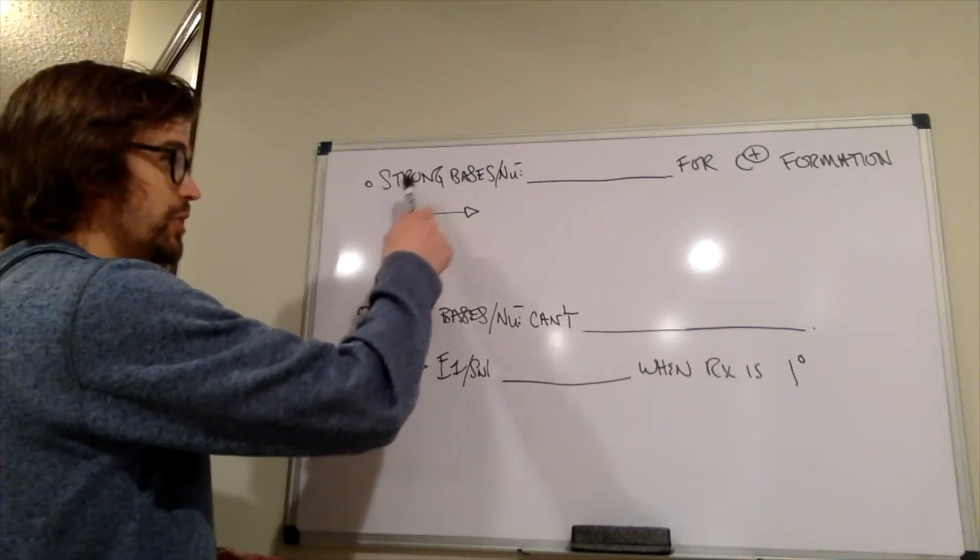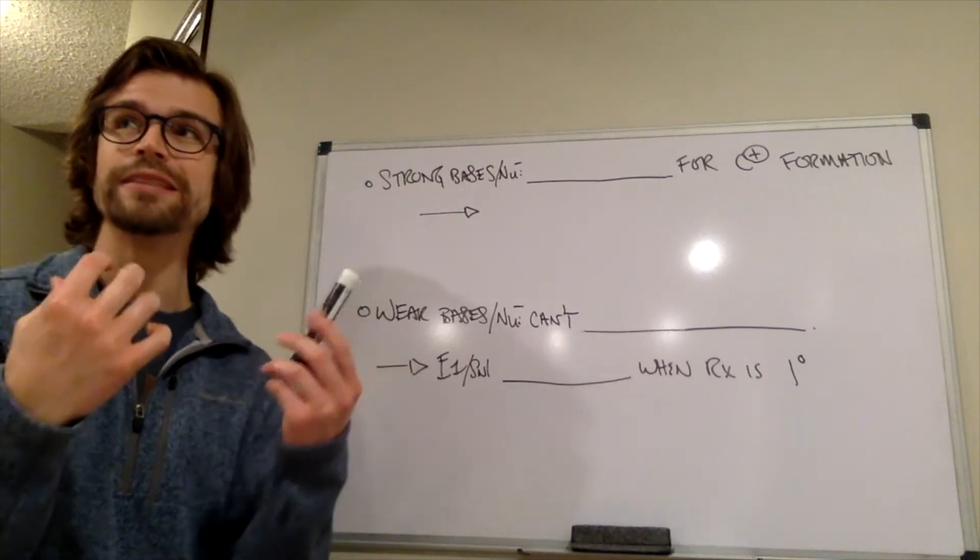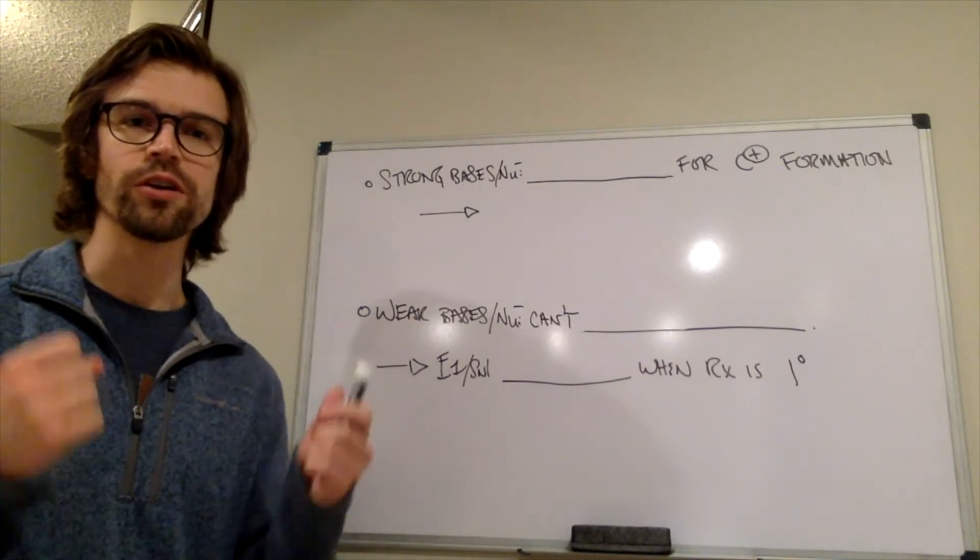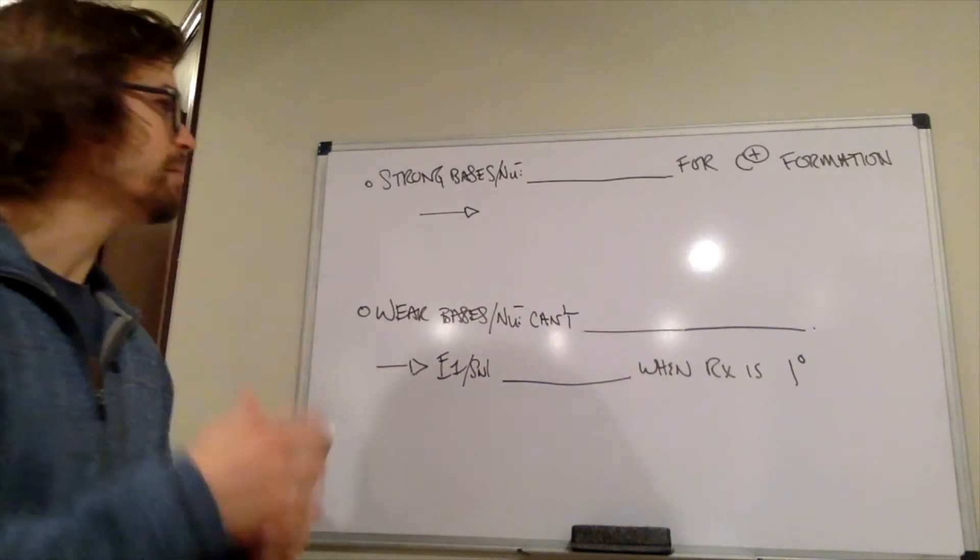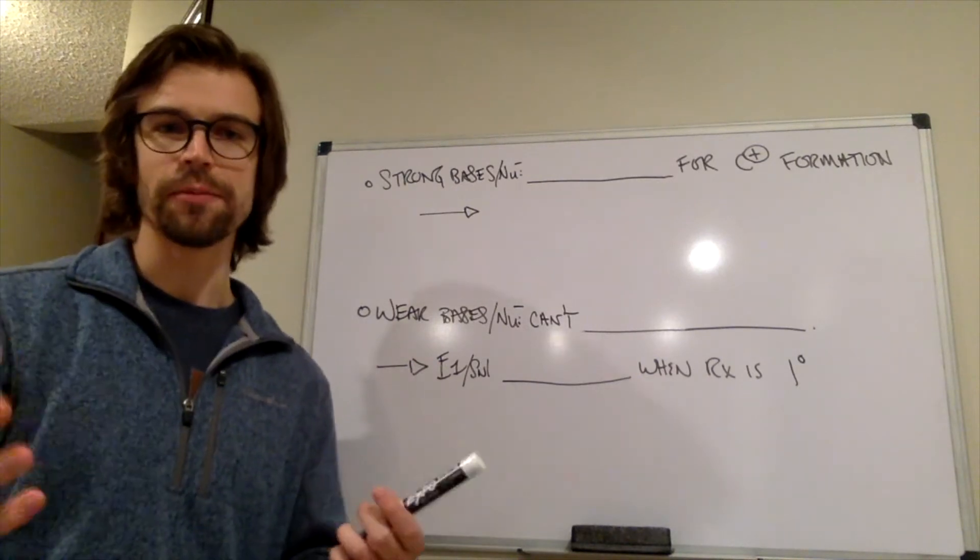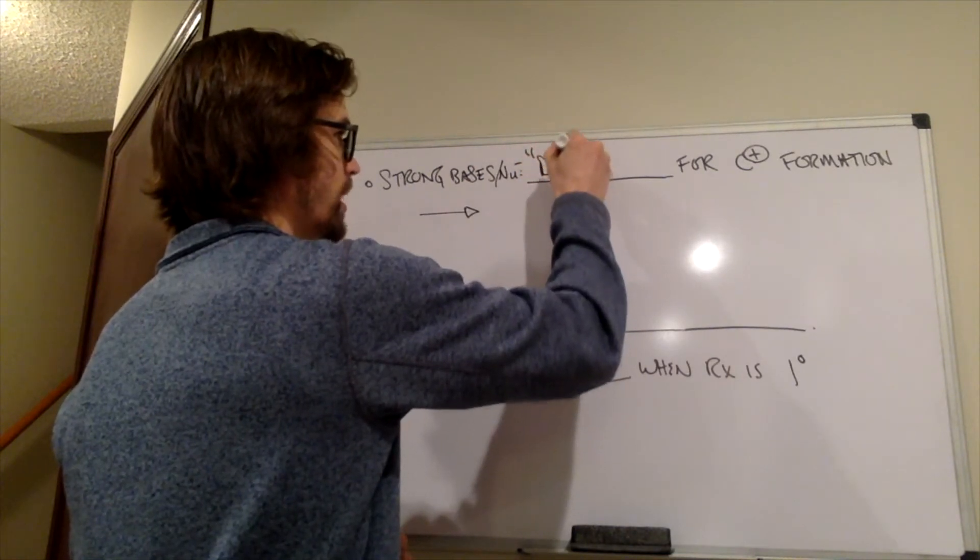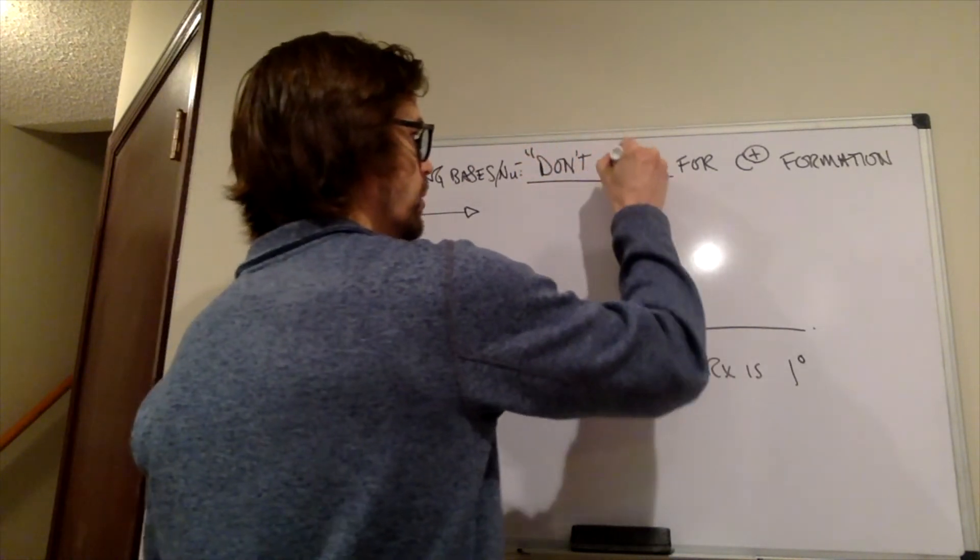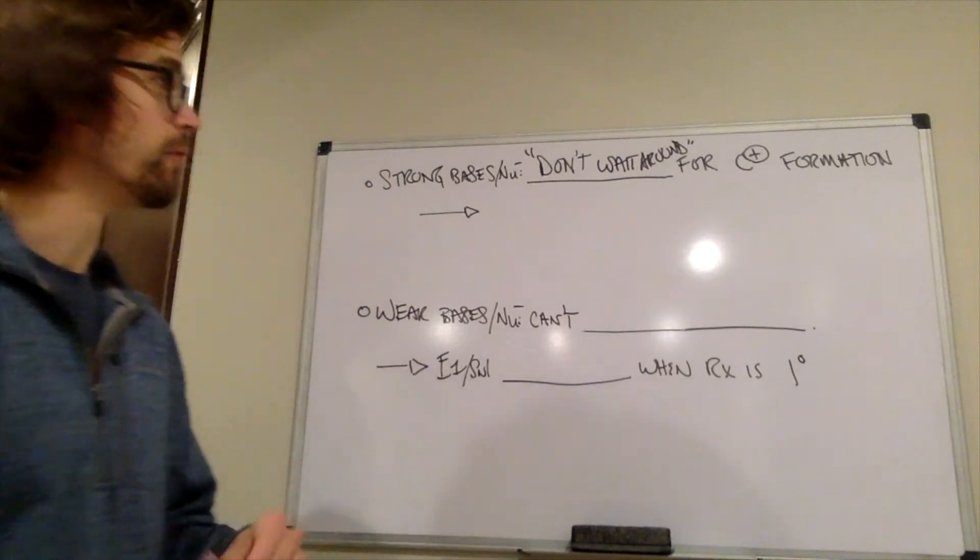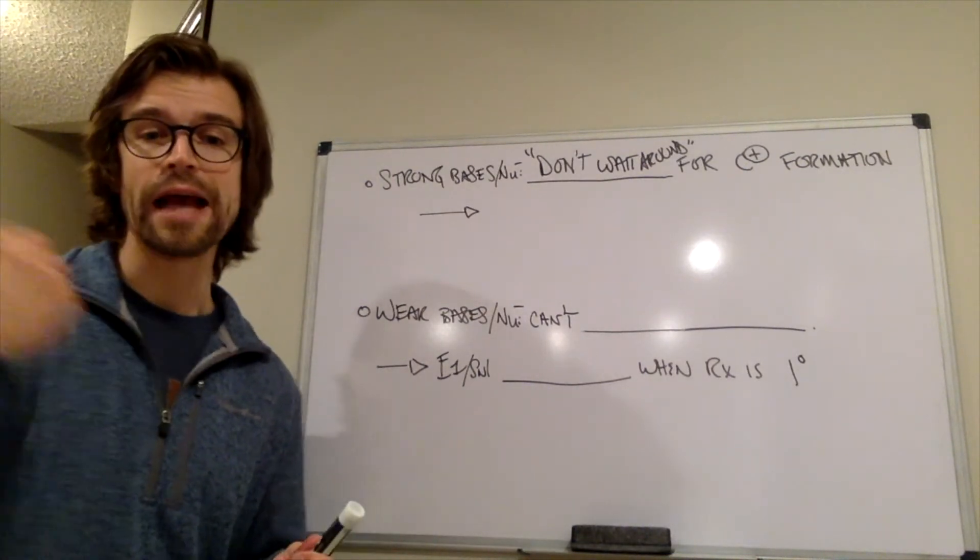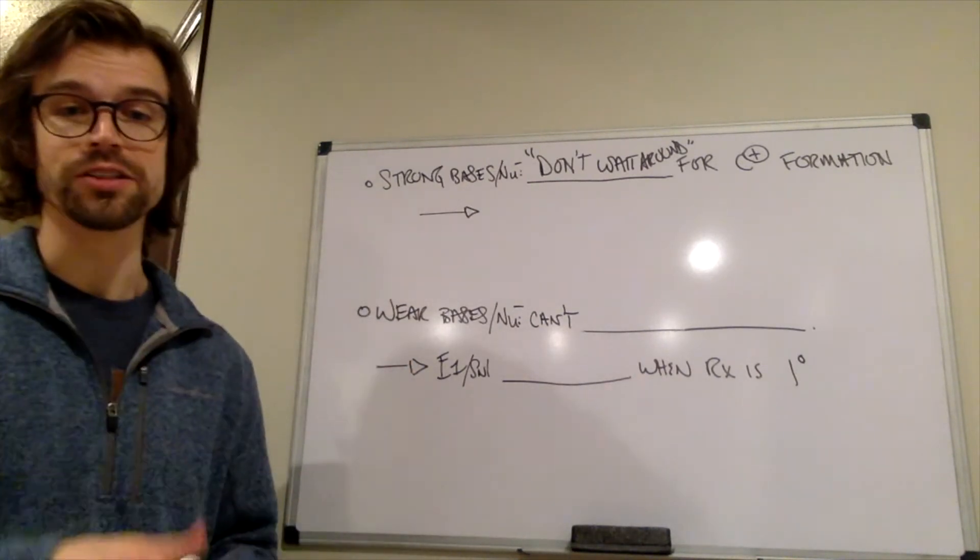And we've defined what a strong base, a strong nucleophile is. We did that in chapter seven. And those strong bases, those strong nucleophiles, we call them strong, but they're also reactive, right? Reactive things want to react. And what we mean by that, and how that really impacts this type of chemistry is that strong bases, strong nucleophiles, they don't wait around for carbocation formation. So they're reactive. They want to react now. They don't want to wait for the halogen to decide to leave. They're going to force the halogen to leave.